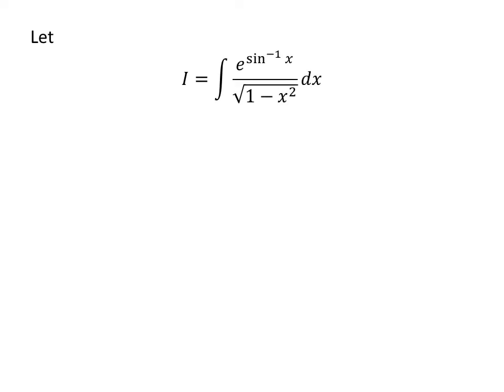Let i be equal to integral of exponential of arc sine of x upon square root of 1 minus square of x with respect to x. Let us apply the substitution method. Assume arc sine of x is equal to t.